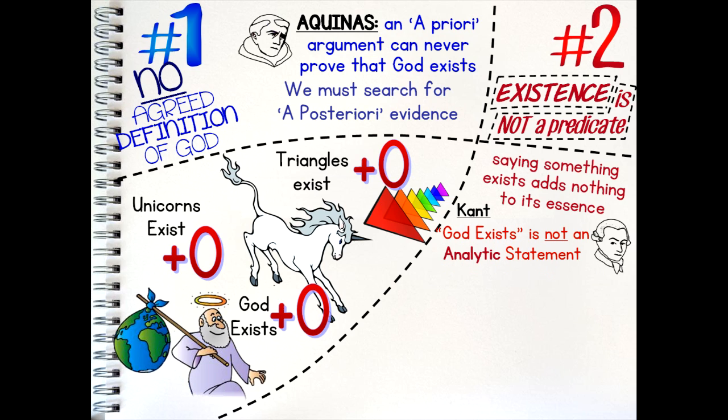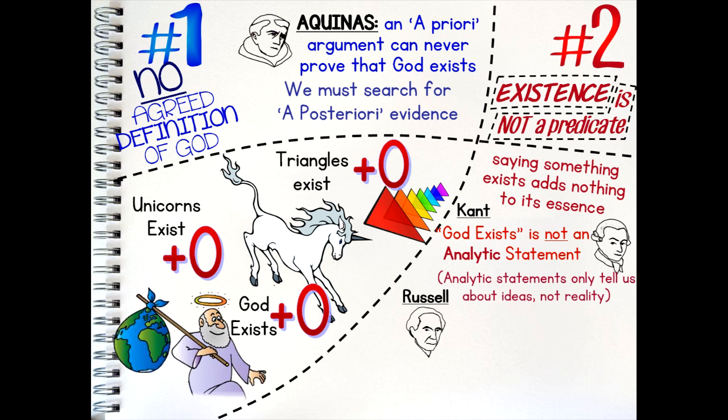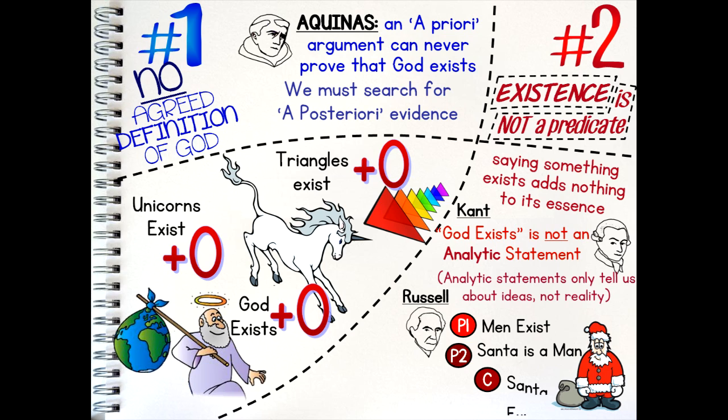Immanuel Kant, a German philosopher, argued that the statement 'God exists' can never be treated as an analytic statement. Analytic statements can only describe ideas, and not reality. Bertrand Russell said that if existence could be treated as a predicate, the following argument would work. Premise one: men exist. Premise two: Santa is a man. Therefore, conclusion: Santa exists. The conclusion of this argument is false — Santa's not real. But if existence were a real predicate, it would be true. Therefore, existence cannot be a real predicate.